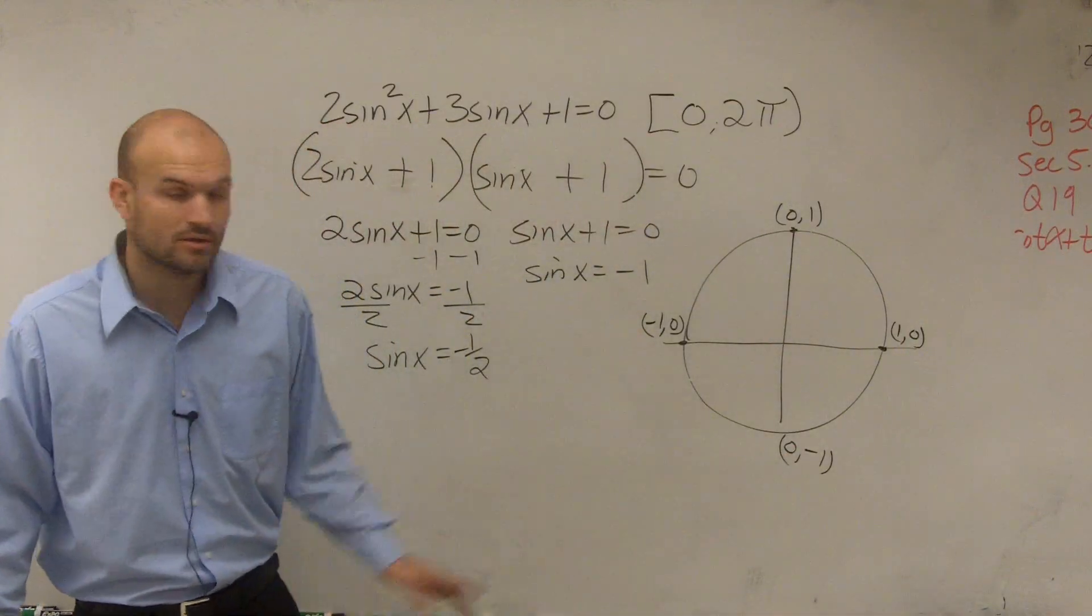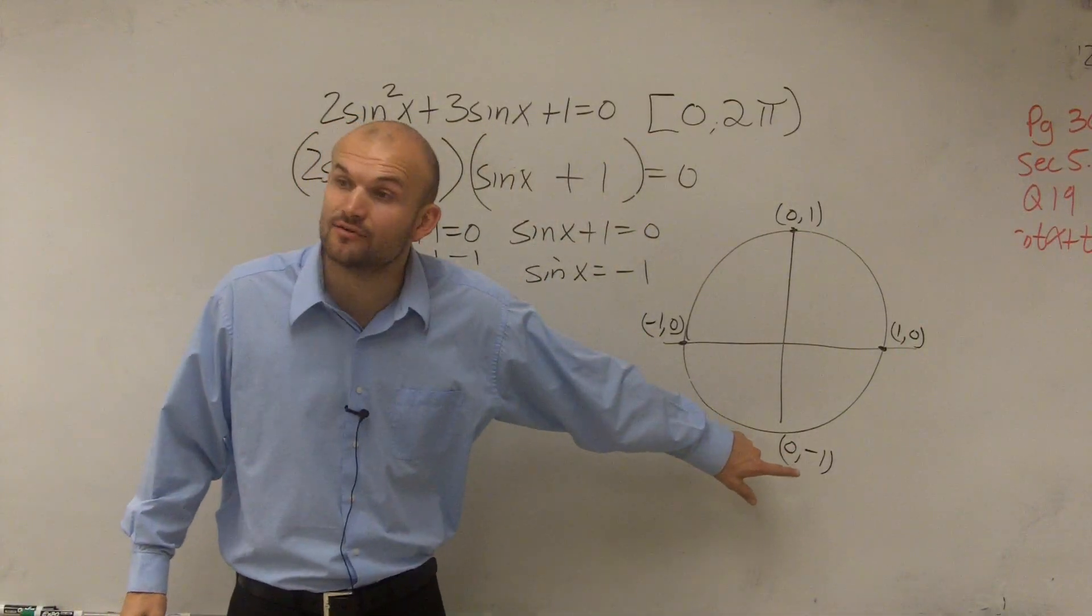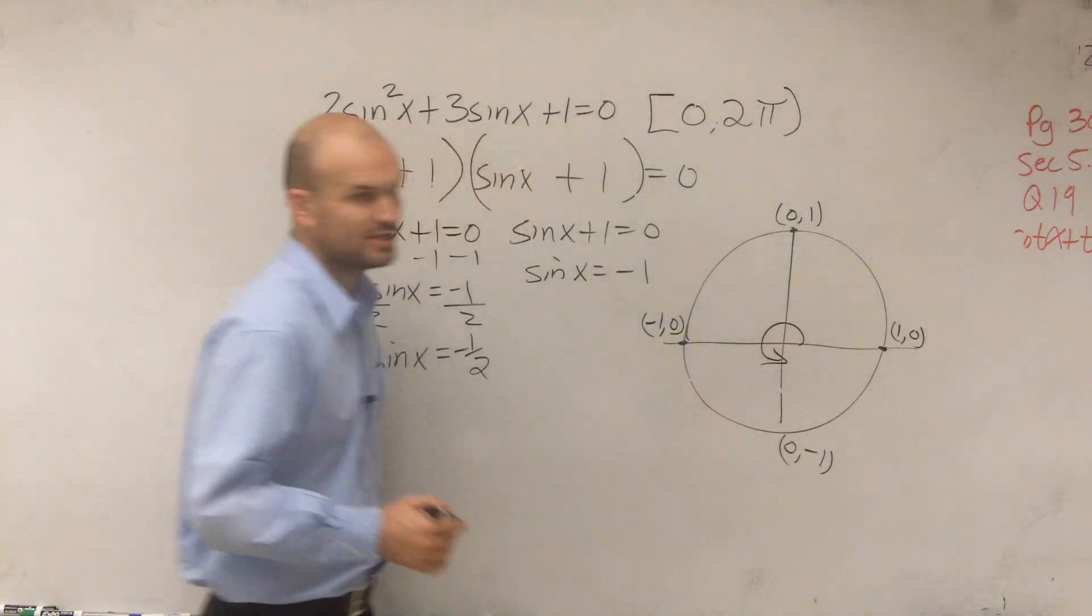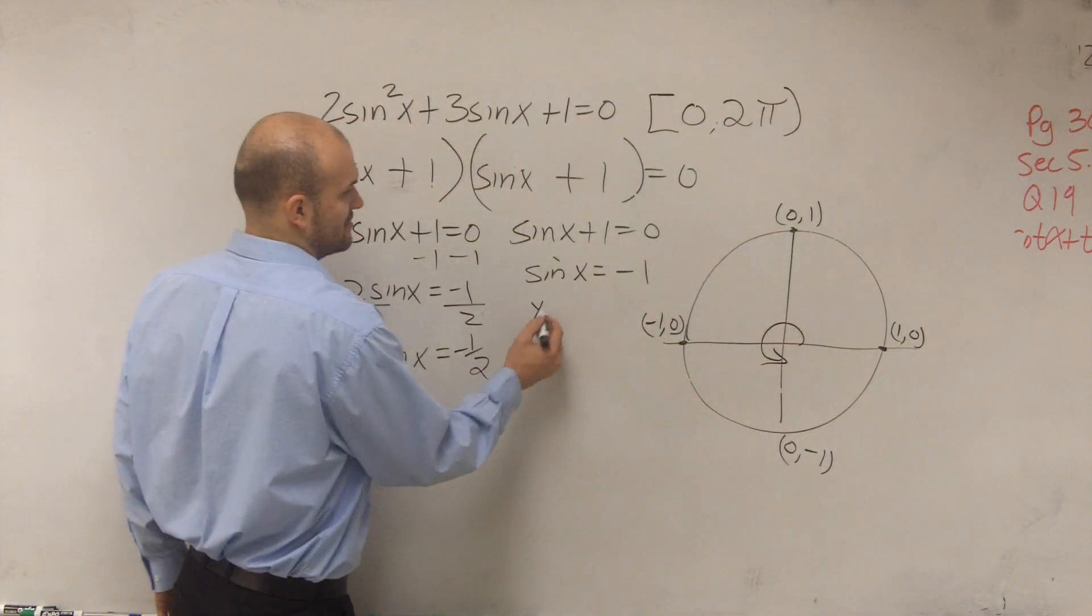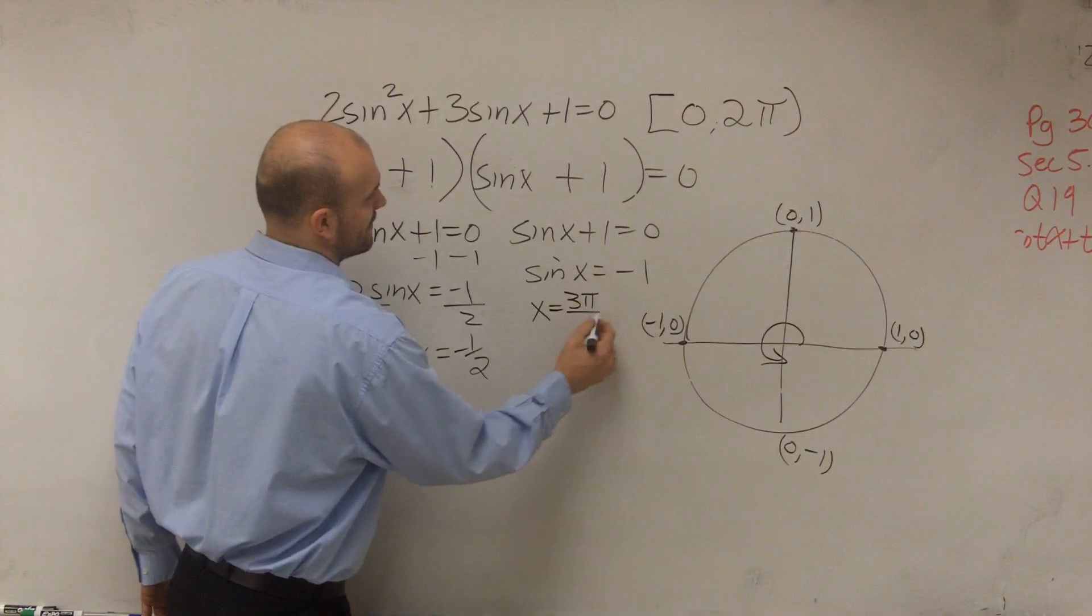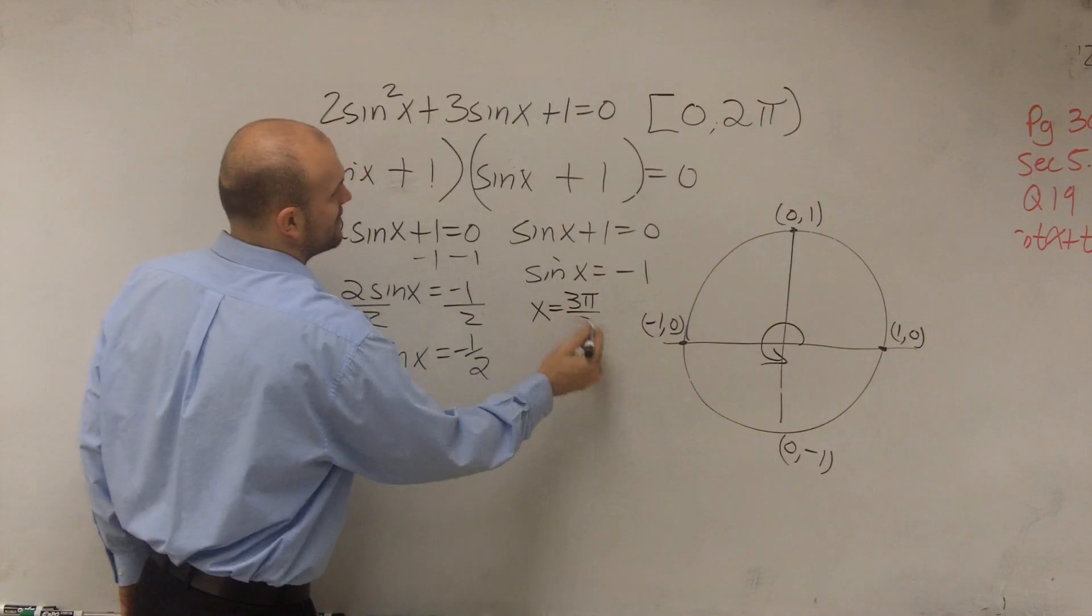So the only angle when sine is represented as negative 1 is going to be this angle all the way here, which is, does anybody know? There we go, thank you. Not 3π over 3, 3π over 2.